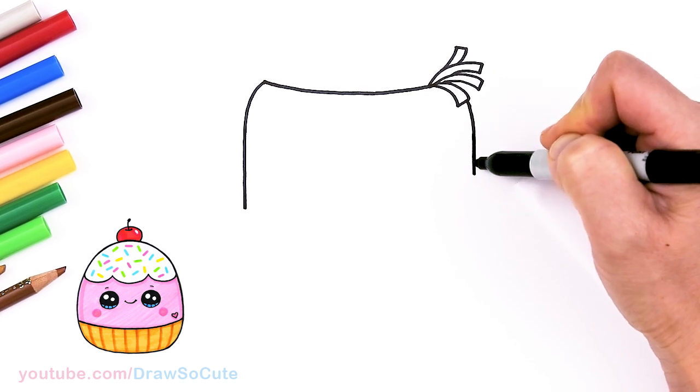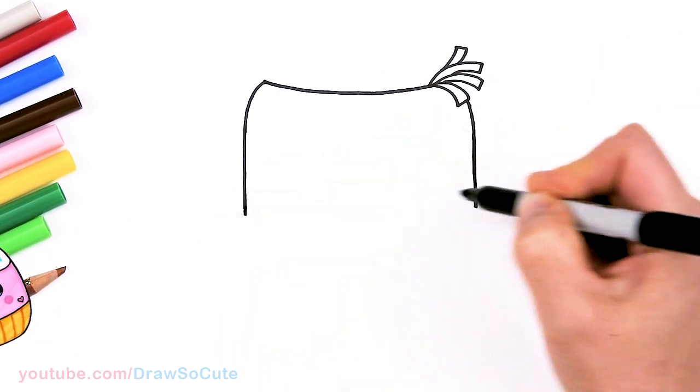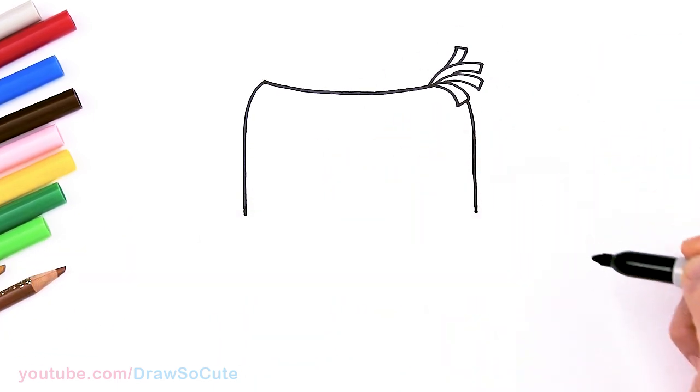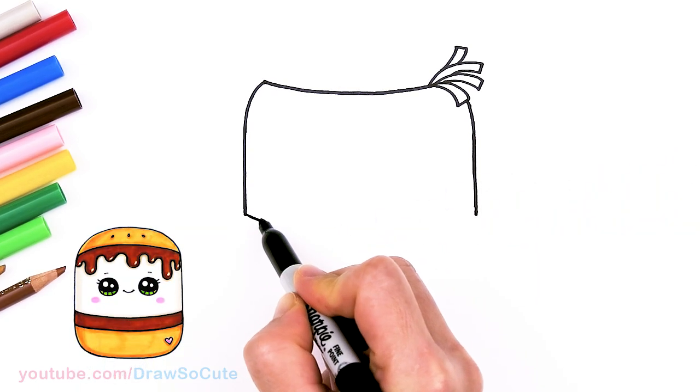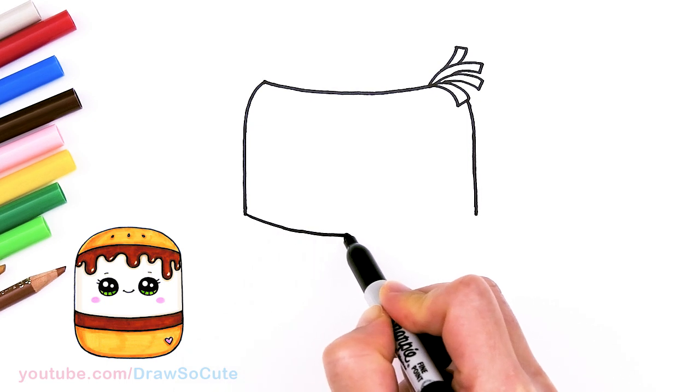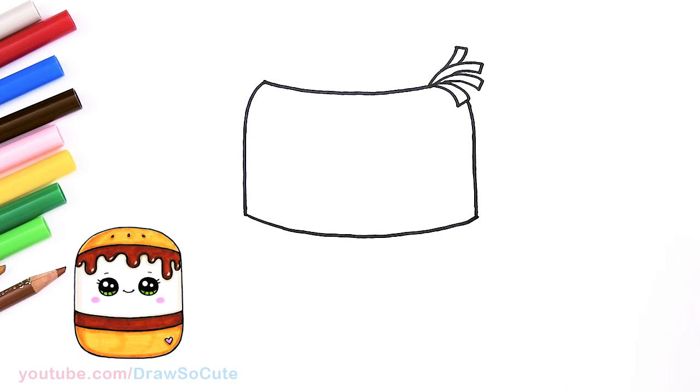So this is kind of like the S'mores Squishmallow. It's just a little bit more straighter, rectangularish. So about right there. Now that we're about the same level, I'm going to go ahead and connect it with a curve. So this is going to be the beginning of the foil wrapper. About right there.